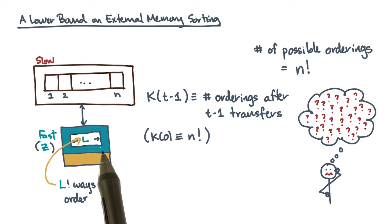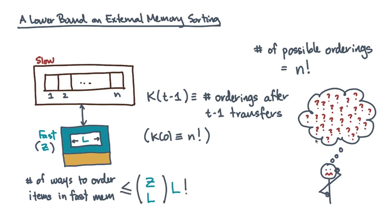Now, if there are any other items in fast memory already, let's suppose that you already know their relative ordering. So, how many ways can you order up to z minus l old items plus the l new items? It's at most z choose l times l factorial. This is the factor by which the number of possible orderings might go down.